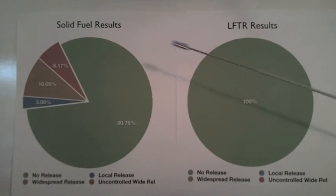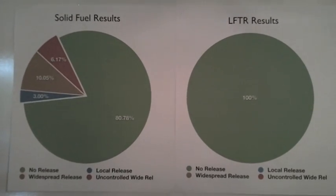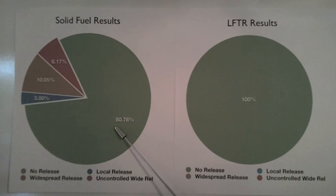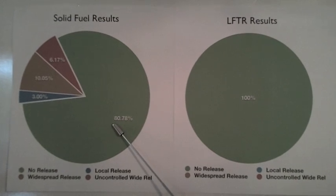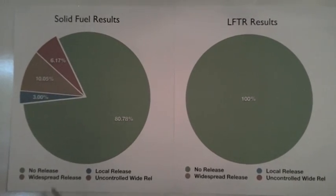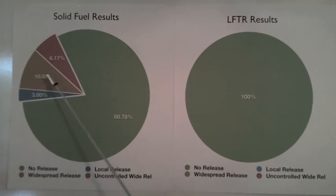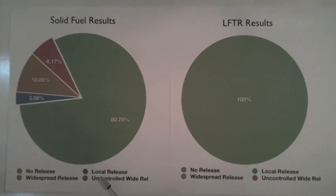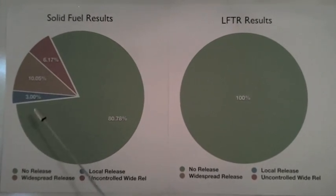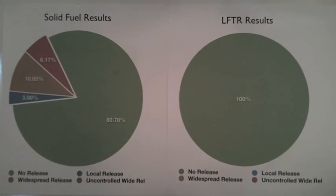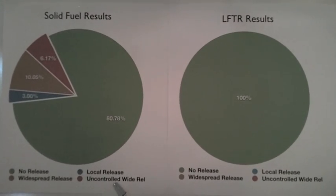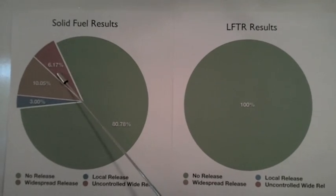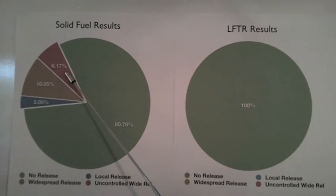Let's look at the solid fuel results. Green means no release — there is an approximately 80% chance of that with the solid fuel reactor. Tan means widespread release, approximately 10% chance. Blue means local release, there is a 3% chance. And red means uncontrolled wide release — there is an approximately 6% chance of that.